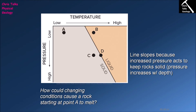What would happen if we were to increase both the pressure and the temperature at the same time? If we start increasing the temperature on rock A we're driving it towards the right, however at the same time we're also increasing the pressure, so we're driving the rock downwards as well. The pressure will counteract the increase in temperature and stop the rock from melting — rock A will remain within the solid field.